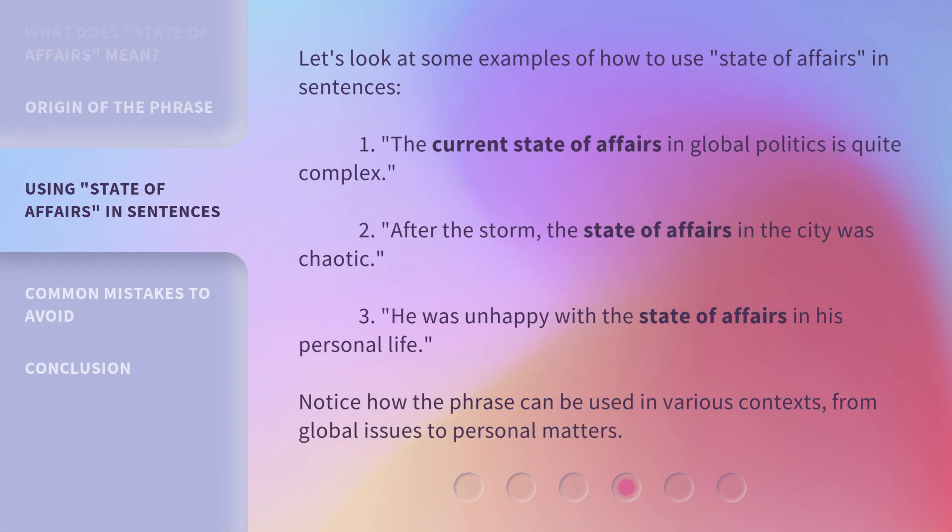Let's look at some examples of how to use 'State of Affairs' in sentences. 1. The current state of affairs in global politics is quite complex. 2. After the storm, the state of affairs in the city was chaotic. 3. He was unhappy with the state of affairs in his personal life. Notice how the phrase can be used in various contexts, from global issues to personal matters.